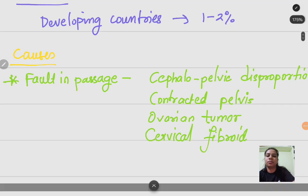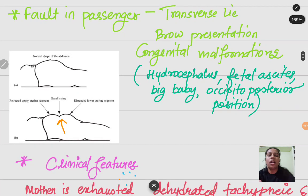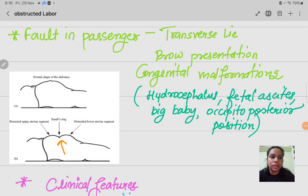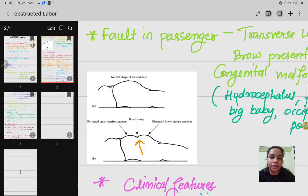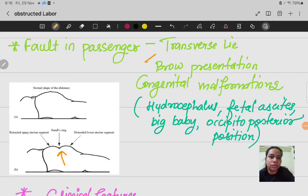Next is fault in the passenger. If the baby is having transverse lie, the baby is sleeping in a transverse position in mother's uterus. In this position, there is already less space and baby is in transverse position, so how will the baby come out? This can be a cause of obstructed labor.